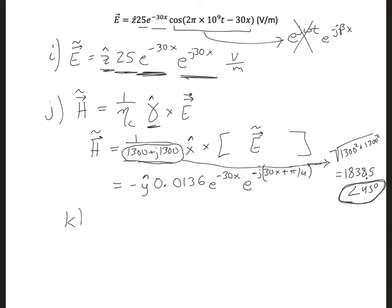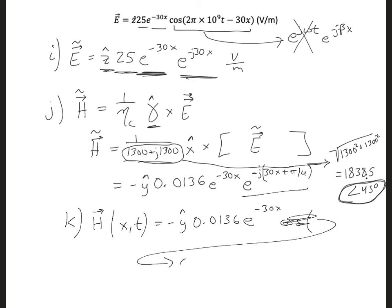And in the last part, we want to convert this magnetic field to the time domain. So we would get H, now it's just a vector in the time domain. It's a function of x and t. The orientation is the same. The magnitude is the same in the time domain as the phasor domain. The only thing now is that we want to write this exponential as a cosine. So we have cosine, and I'm going to run out of room, so let me put that over here. Cosine omega, which is 2 pi times 10 to the 9 t.